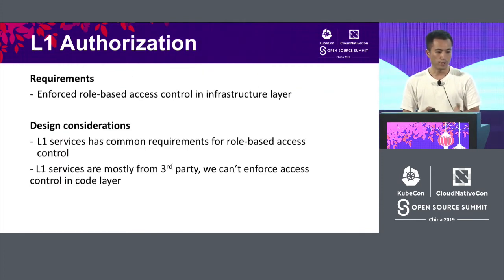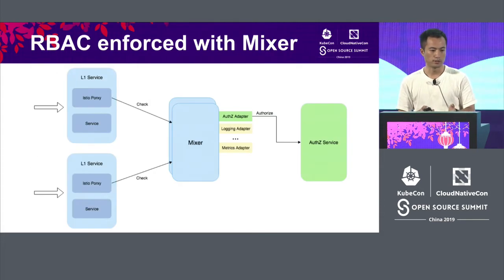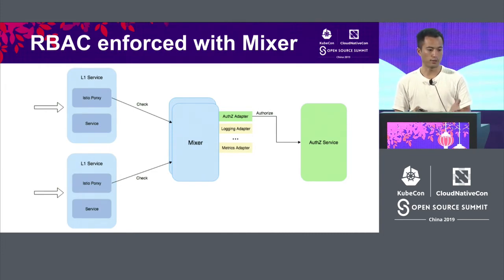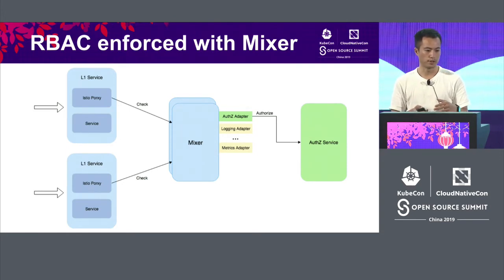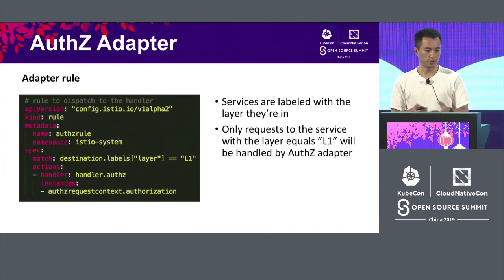In L1, we are enforcing role-based access control at the infrastructure layer — that's where Istio mixer comes in. We have customized an adapter on the mixer, so all requests to L1 services will be handled by our adapter. The adapter will authorize with our centralized authorization service. We have a rule that says only requests to services with layer equals L1 will be handled by the adapter.